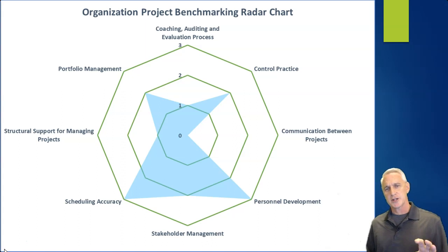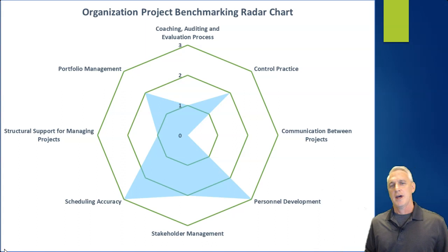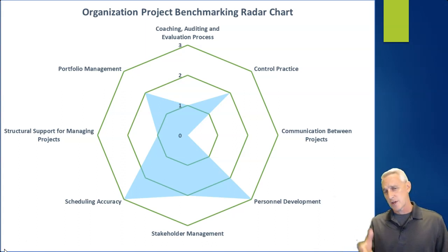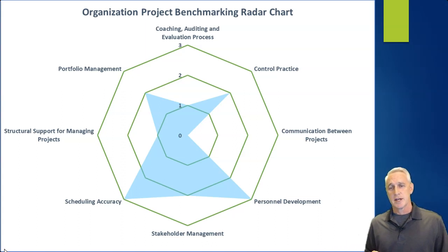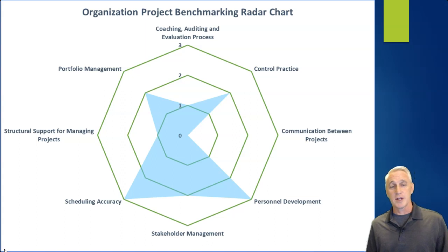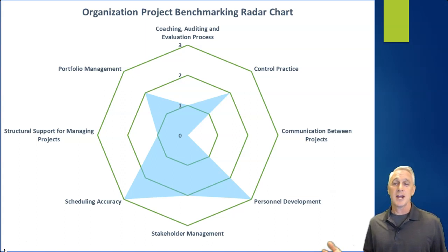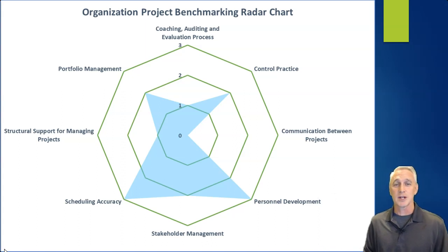A radar chart is a great way to show how well we're doing. In this example, our company scores about a two in control practices. However, we're doing really well in personal development, scoring a three, and also in scheduling accuracy. On the other hand, communicating between projects shows relatively nothing — we're scoring a zero, so that's something we want to improve.